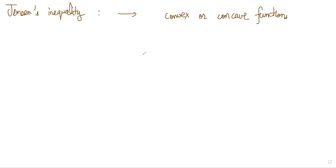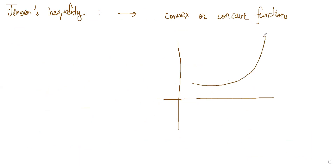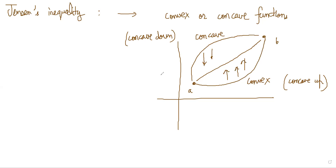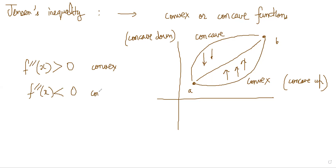Convexity and concavity basically represent the curvature of a curve. If you have two points, you could join points a and b by a straight line, a convex curve, or a concave curve. Convex means concave up and concave means concave down — the cave-type structure is up or down. To decide concavity or convexity of a function, we take the double derivative. If it is greater than zero, it is convex; if it is less than zero, it is concave.